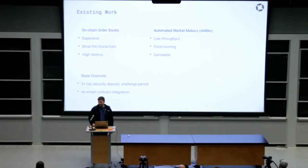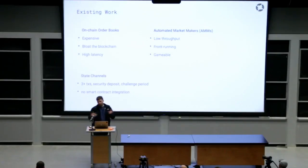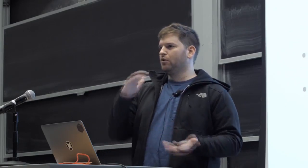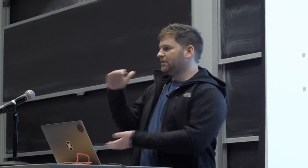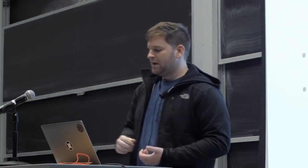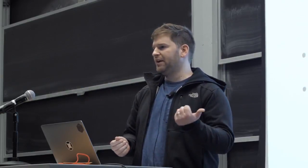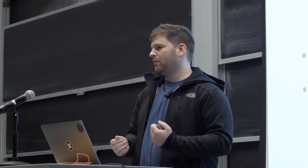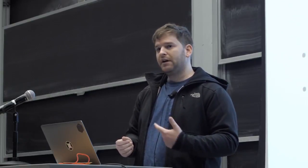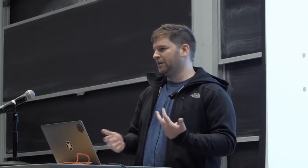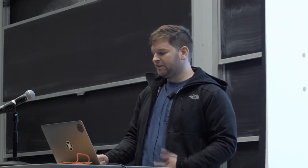The very earliest decentralized exchanges on the Ethereum blockchain took exchange functionality from a traditional centralized exchange and tried to port that directly into an Ethereum smart contract. What you'd end up with is an order book — a list of people offering to buy or sell digital assets — existing within an Ethereum smart contract. And what this means is that every single time you want to place, modify, or cancel an order, you have to create an Ethereum transaction, which is expensive, bloats the blockchain, and doesn't necessarily result in any value being transferred.